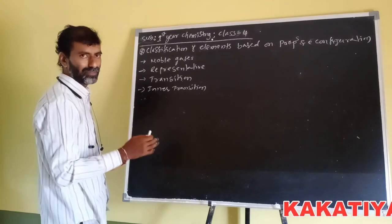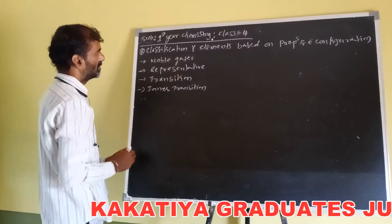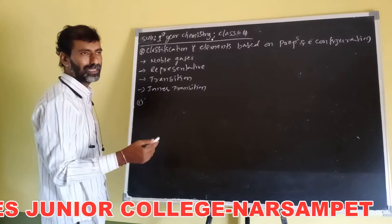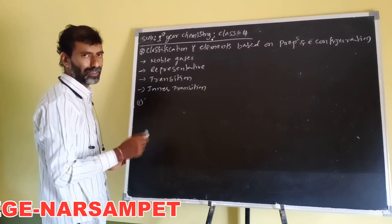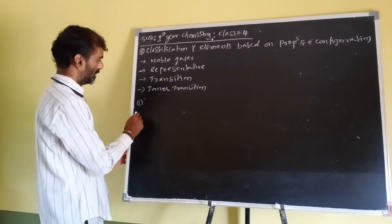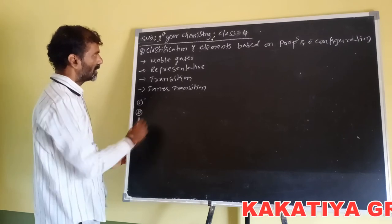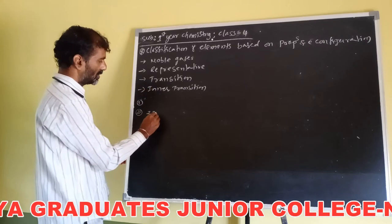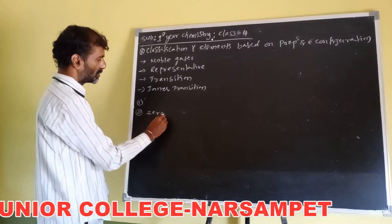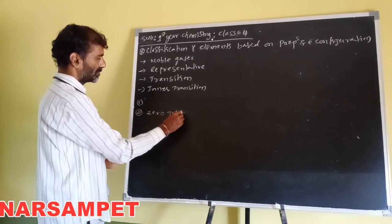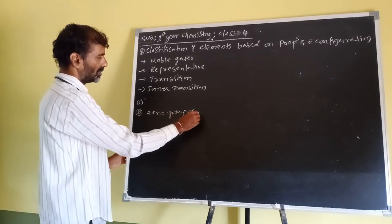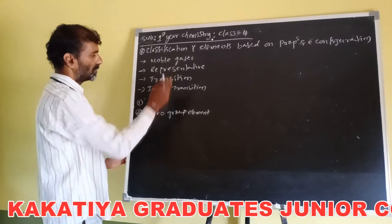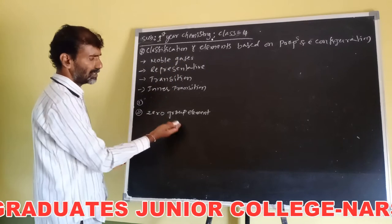First, noble gases. They have a completely filled valence shell with electrons. Noble gases are called zero group elements — the elements belonging to the zero group in the periodic table are called noble gases.